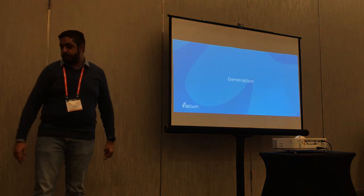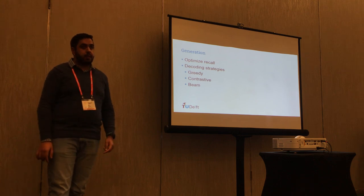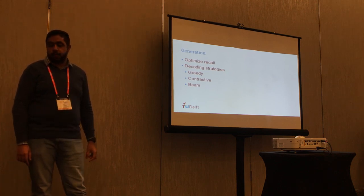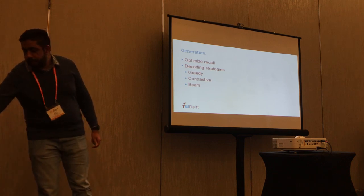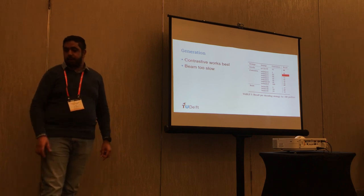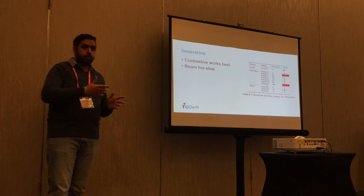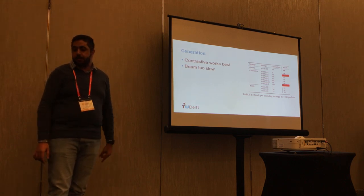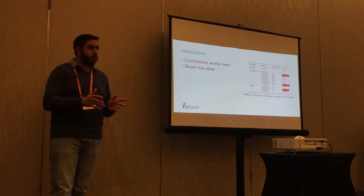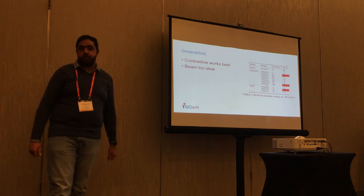In the generation step, we optimize recall. We looked at different decoding strategies: greedy (standard), contrastive search, and beam search. Contrastive search works best — better than beam search while being relatively quick, and it scales well when increasing from 10 to 100 generations per prefix. Beam search works for a few beams but performance decreases as you scale up, and it's too memory-intensive. Contrastive search is our standard choice.